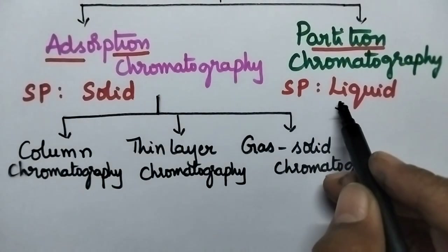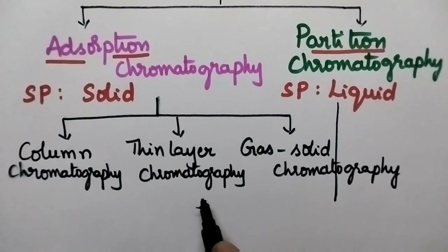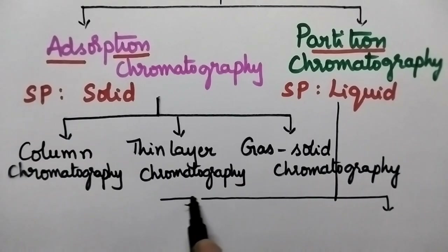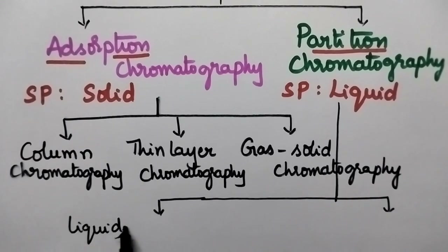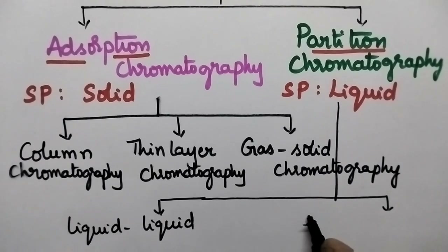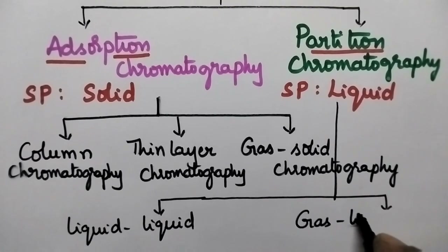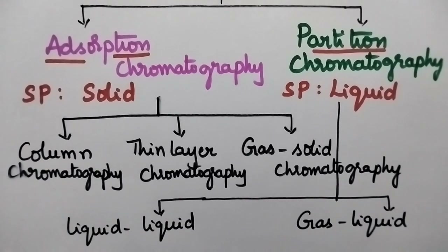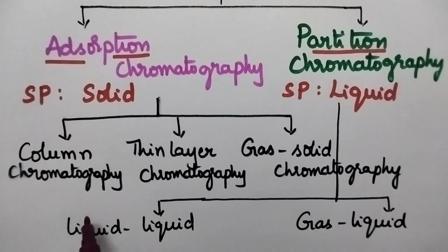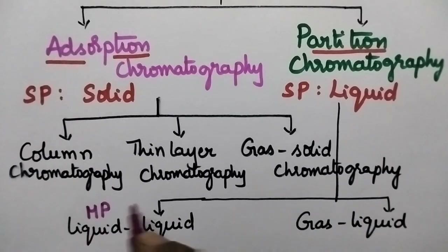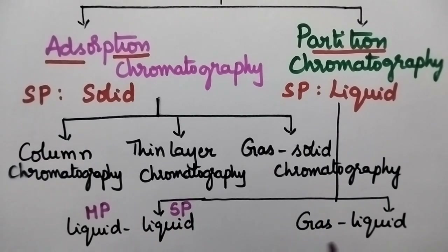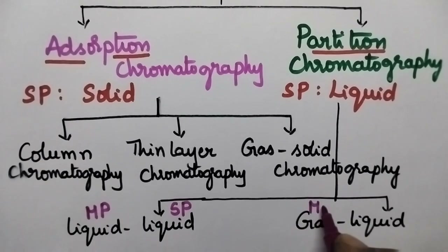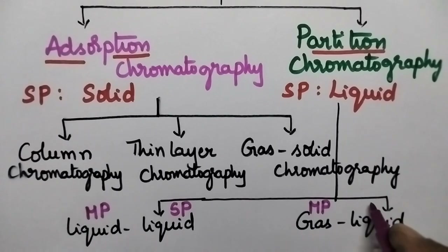Partition chromatography can be classified into two types: liquid chromatography and gas-liquid chromatography. In liquid chromatography, the mobile phase is in the liquid state and the stationary phase is also in the liquid state. In gas-liquid chromatography, the mobile phase is in the gaseous state whereas the stationary phase is in the liquid state.